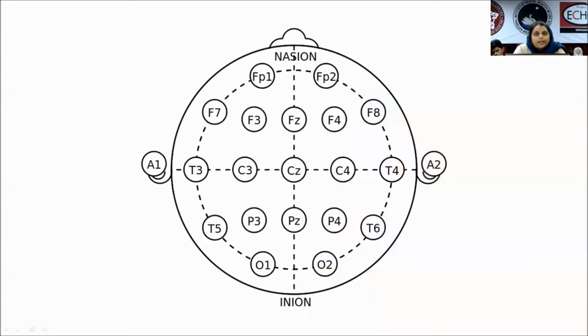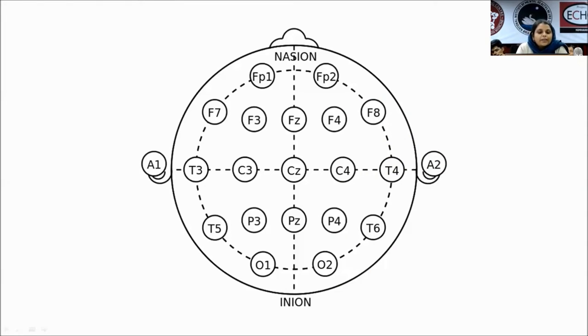Dr. Jayant in the previous session has clearly covered this. To briefly say: F3 and F4 correspond to the dorsolateral prefrontal cortex and C3 corresponds to the motor cortex.